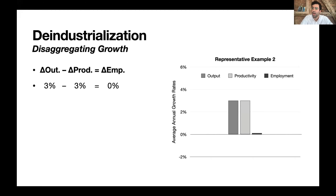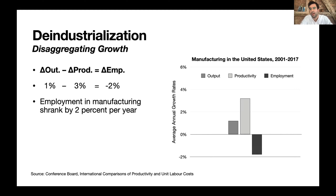Conversely, in the same factory, if output were growing by 3% per year and productivity were also growing by 3% per year, no additional workers would be needed: 3 minus 3 equals 0. Here's what's actually going on in US manufacturing in recent decades: output growing by 1% per year, productivity growing by 3% per year — 1 minus 3 is negative 2, meaning manufacturing employment has been shrinking by 2% per year.